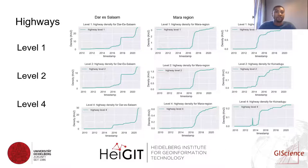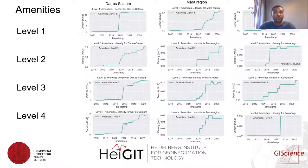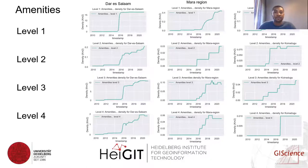For example, in Dar es Salaam level one and level two seem to be mapped differently from level four. A similar pattern is identified in the Mara region but the mapping activities were quite different. In amenities it was quite different, where the mapping activities happened differently across all the levels.